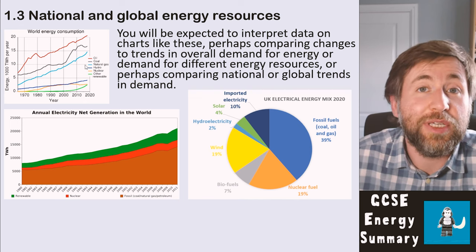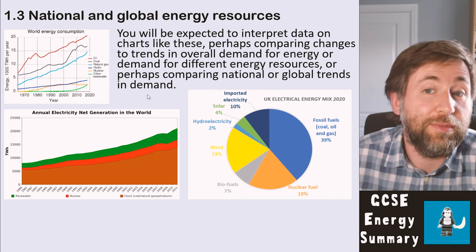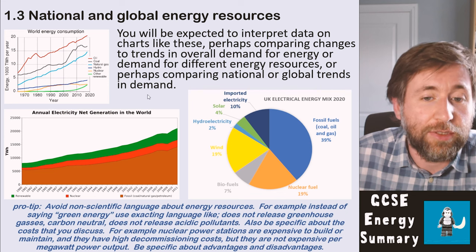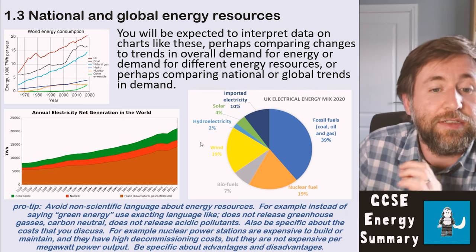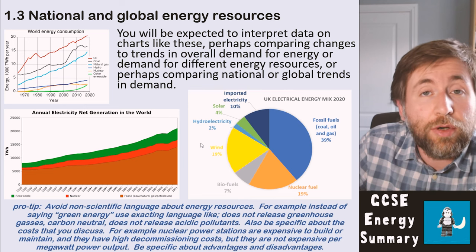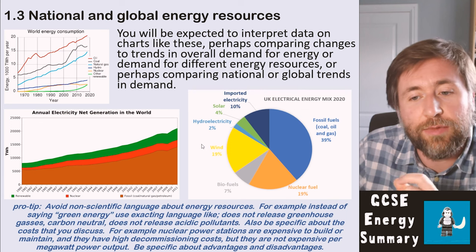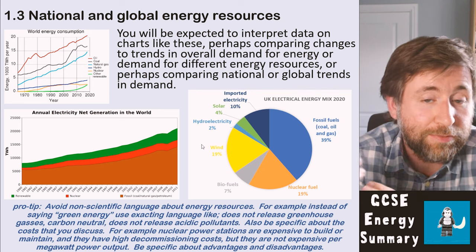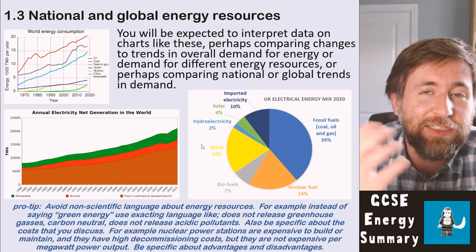Avoid non-scientific language about energy resources. Don't say 'green energy' or 'pollutes.' Use exact language like 'does not release greenhouse gases,' 'is carbon neutral,' or 'does not release acidic pollutants.' Be specific about costs — don't just say 'nuclear costs more'; say 'nuclear power stations are expensive to build and maintain' or 'they have high decommissioning costs.' Nuclear is actually less expensive per megawatt power output than many other options — so vague statements lose marks. Be really specific about the advantages and disadvantages you give.